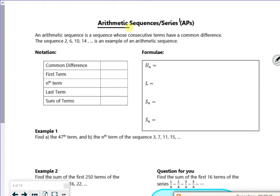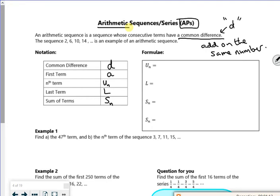Arithmetic or AP - AP is actually arithmetic progression. But we'll call it APs and GPs. It means that we add on the same value. So an arithmetic sequence is a sequence whose consecutive terms have a common difference. That common difference I call D. And we're going to add on the same number. So my common difference I call D. My first term I call A. The nth term is UN. The last term we'll call capital L. And the sum of the terms is S with a little n.